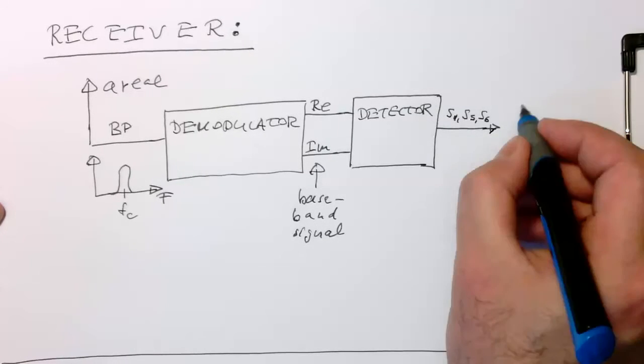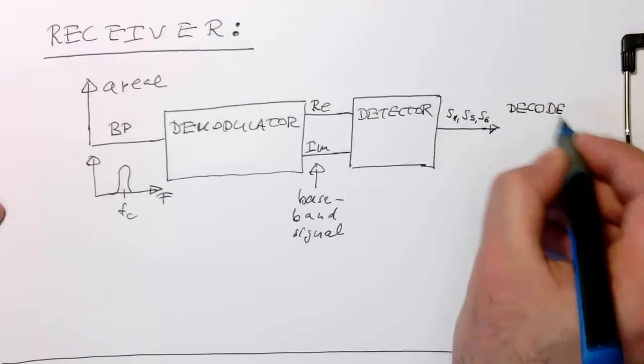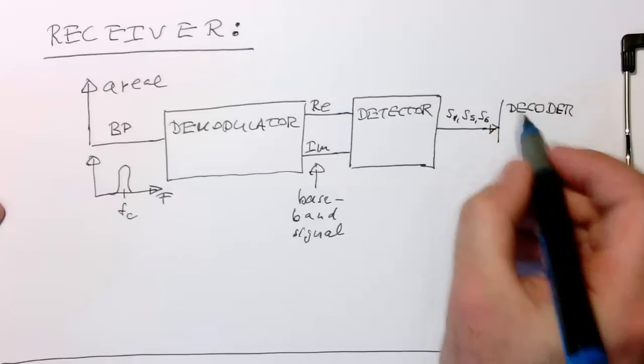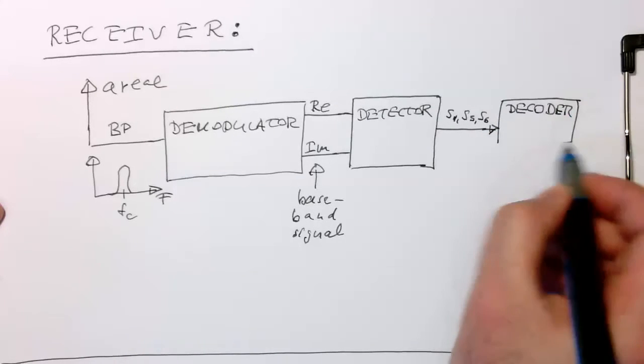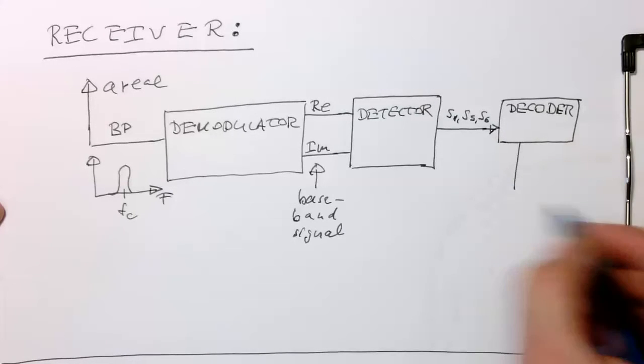And so now we just need to have a decoder, which is combining these symbols, again, into our digital data stream here.